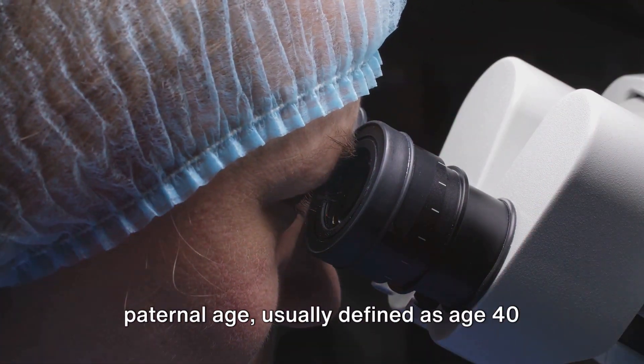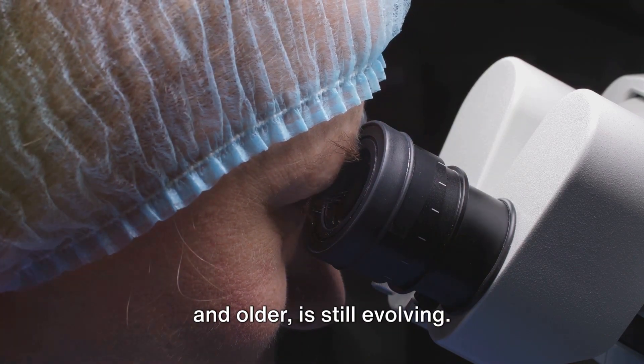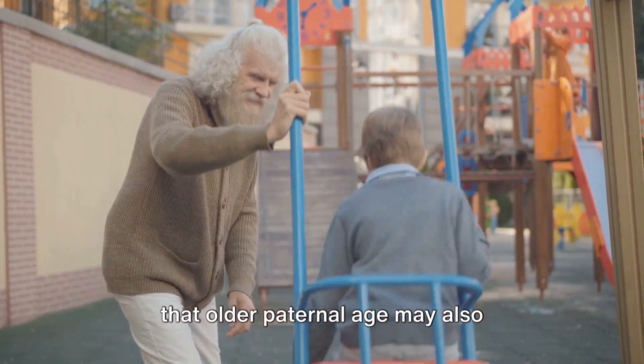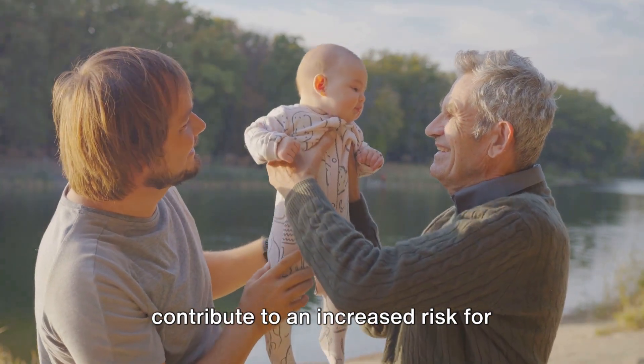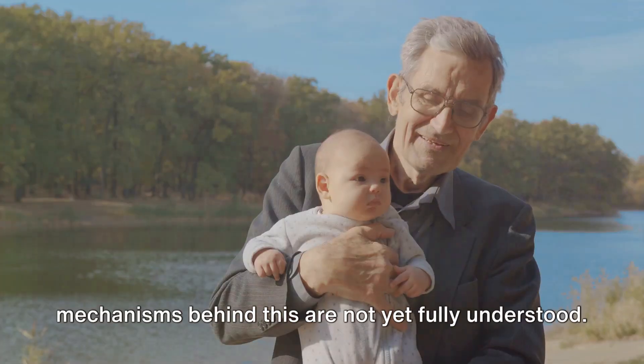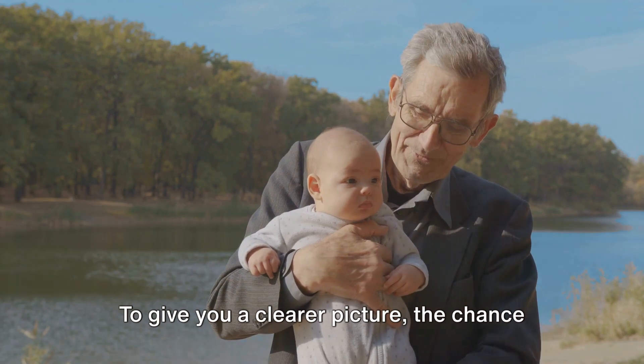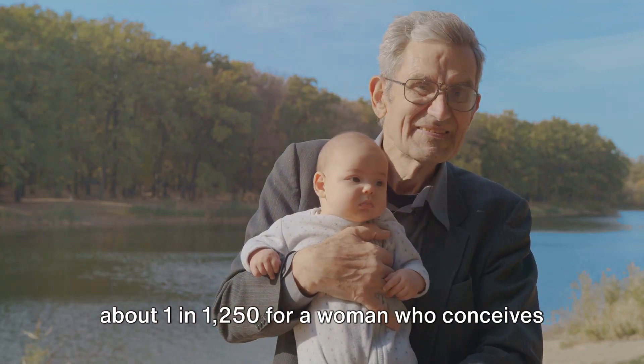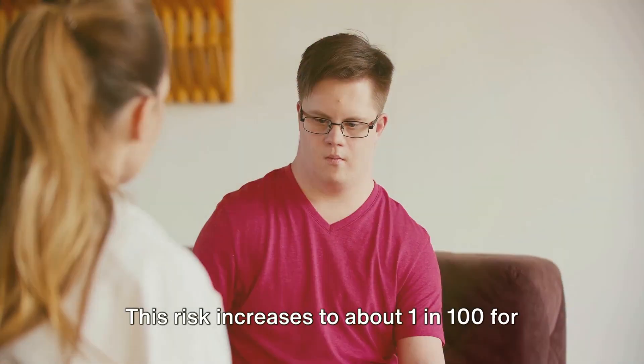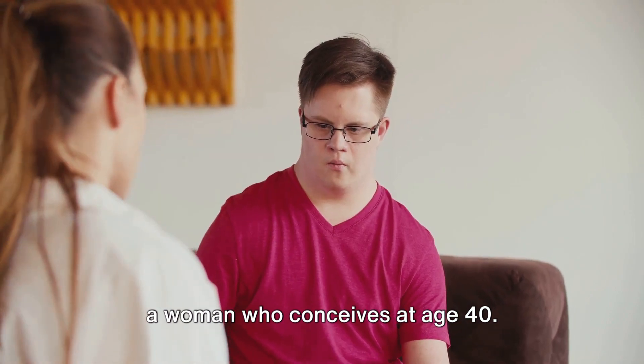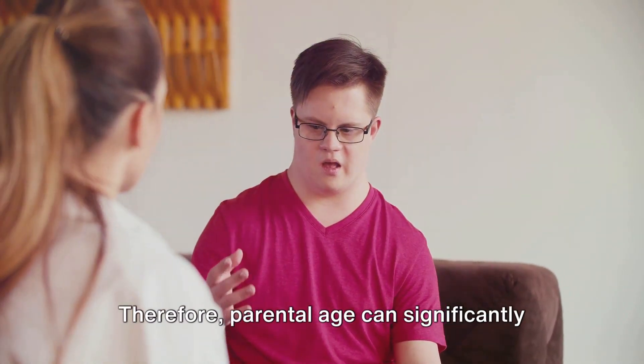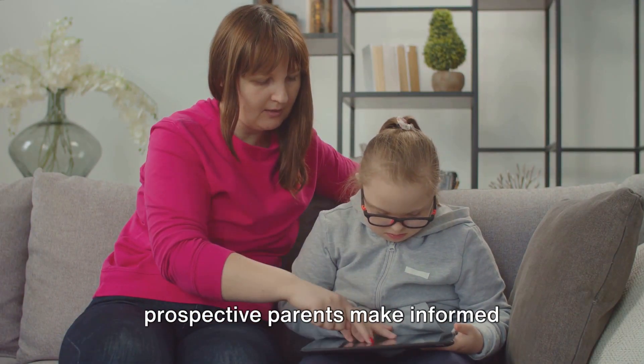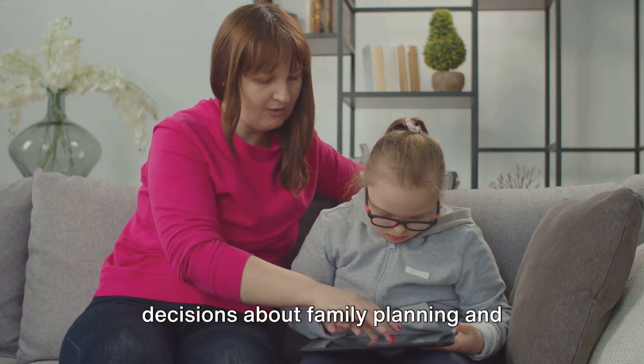On the other hand, research on advanced paternal age, usually defined as age 40 and older, is still evolving. However, evidence is beginning to suggest that older paternal age may also contribute to an increased risk for chromosomal disorders, although the mechanisms behind this are not yet fully understood. To give you a clearer picture, the chance of having a child with Down syndrome is about 1 in 1250 for a woman who conceives at age 25. This risk increases to about 1 in 100 for a woman who conceives at age 40. Therefore, parental age can significantly impact the risk of chromosomal abnormalities. Understanding these risks can help prospective parents make informed decisions about family planning and genetic testing.